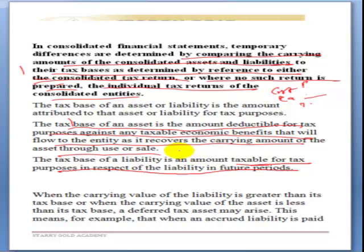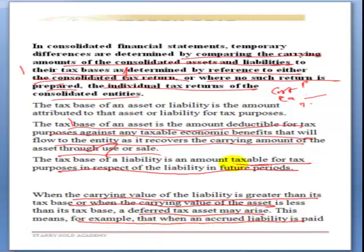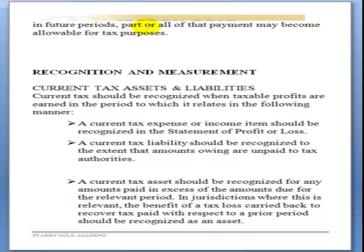We need to be confident with these terms under income taxes. Tax base is the amount attributable to an asset for tax purposes — cost minus capital allowance. When the carrying value of a liability is greater than its tax base, or when the carrying value of an asset is less than the tax base, a deferred tax asset may arise. For example, when an accrued liability is paid in a future period, part or all of that payment may become allowable for tax purposes.